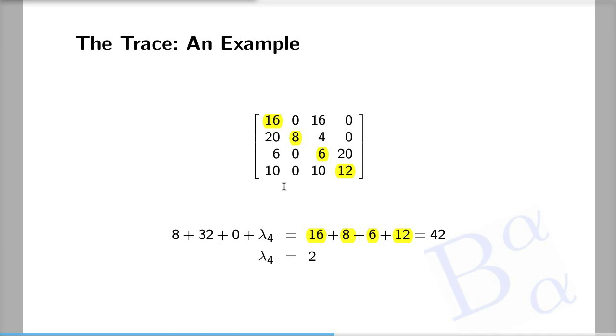You will notice that column one minus column three is (0, 16, 0, 0). In other words, it's twice the fourth column. Therefore, (1, -2, -1, 0) is in the null space, and it is therefore an eigenvector corresponding to the zero eigenvalue.